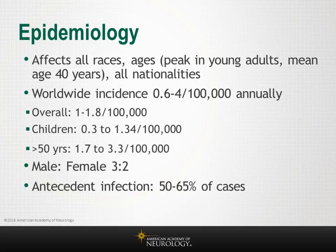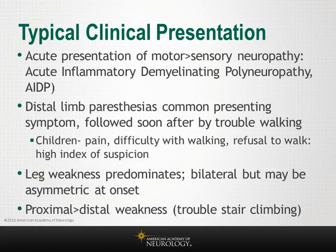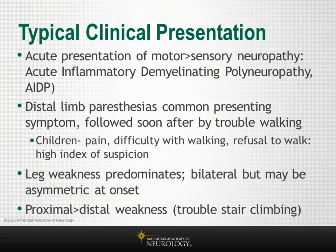Two-thirds of cases of Guillain-Barré syndrome are associated with an antecedent infection. The typical clinical presentation is an acute generalized motor greater than sensory syndrome. The official name is acute inflammatory demyelinating polyneuropathy, or AIDP, which emphasizes the time course and pathology. I will use the term Guillain-Barré syndrome to encompass AIDP and all its variants.